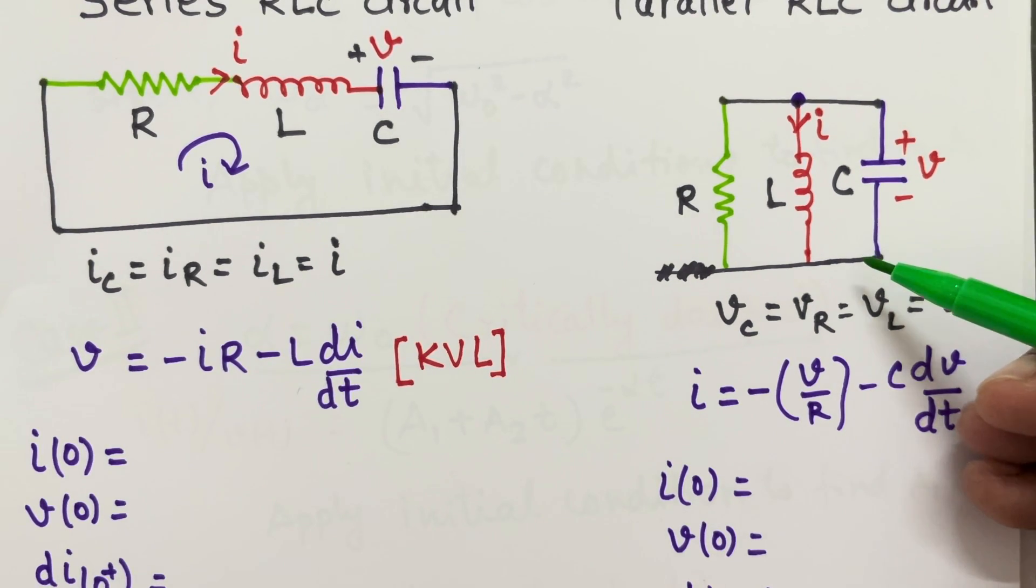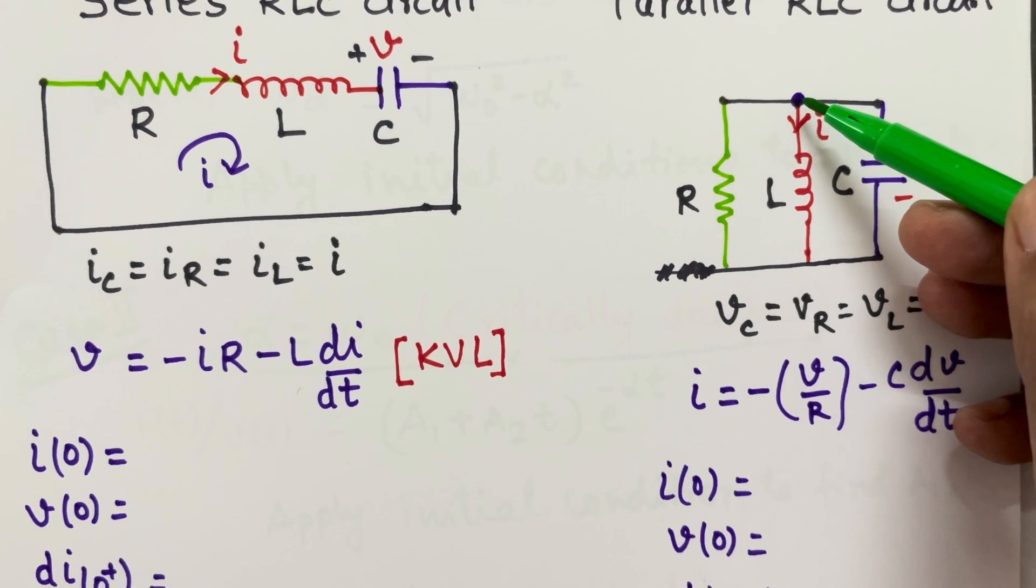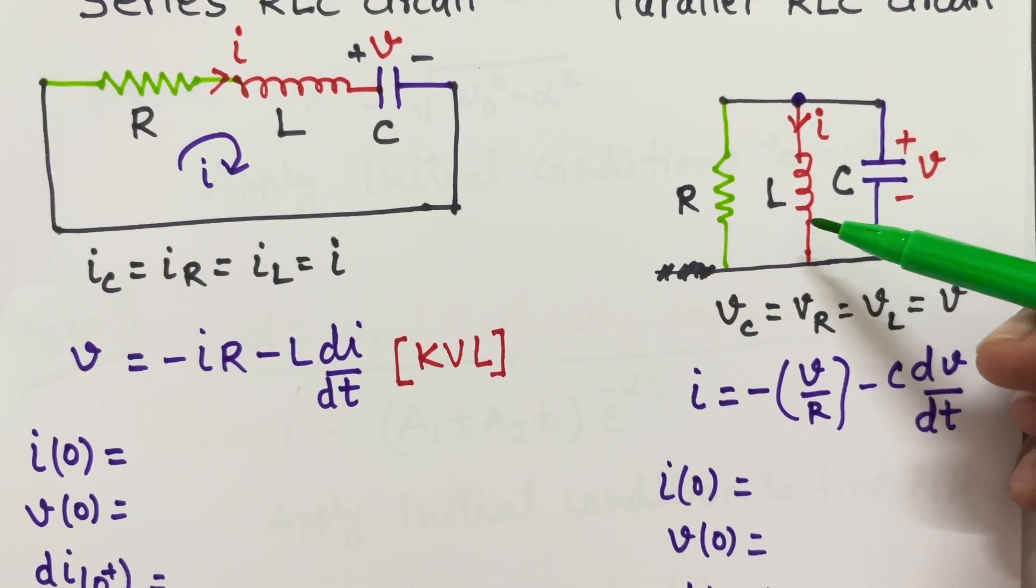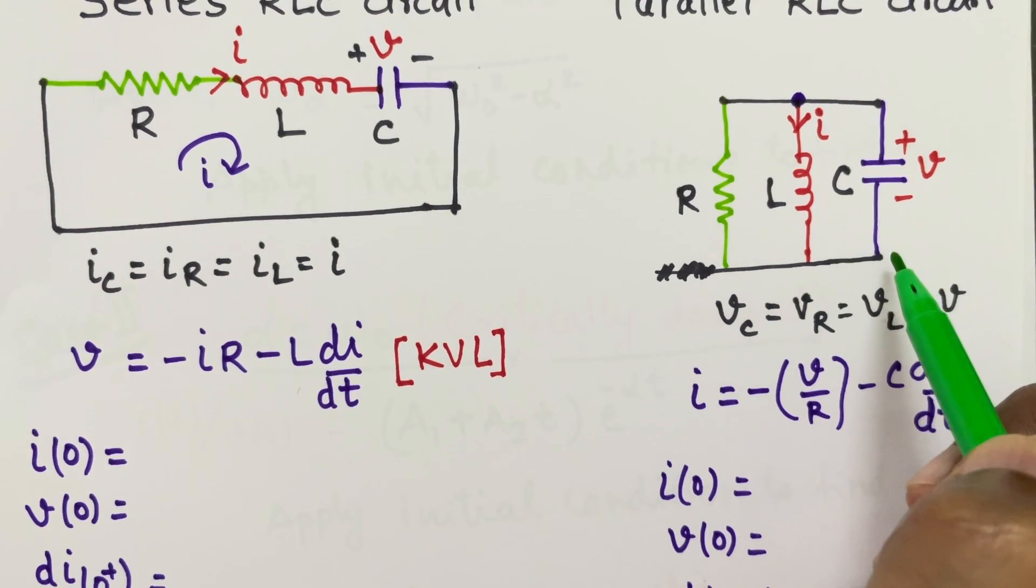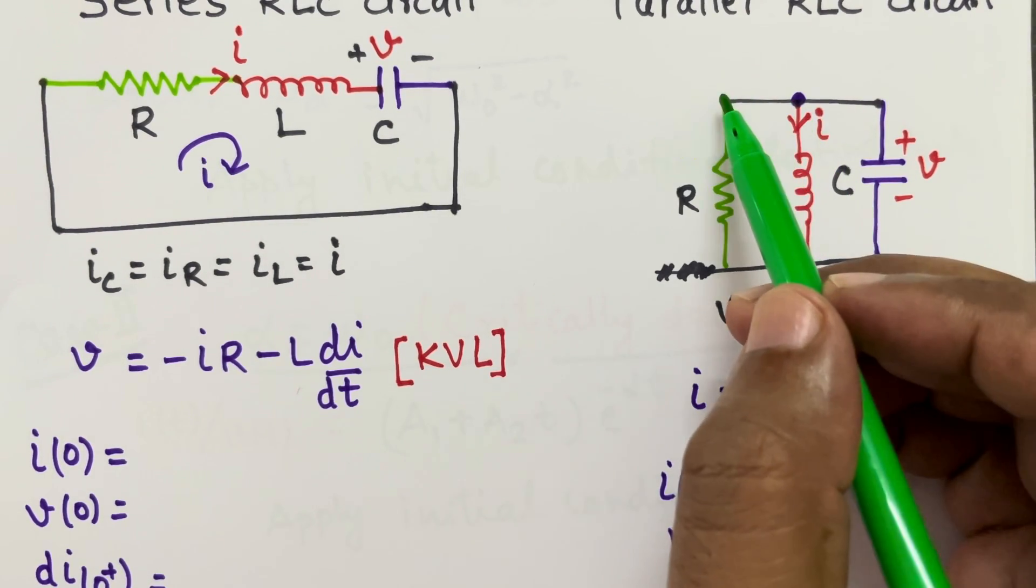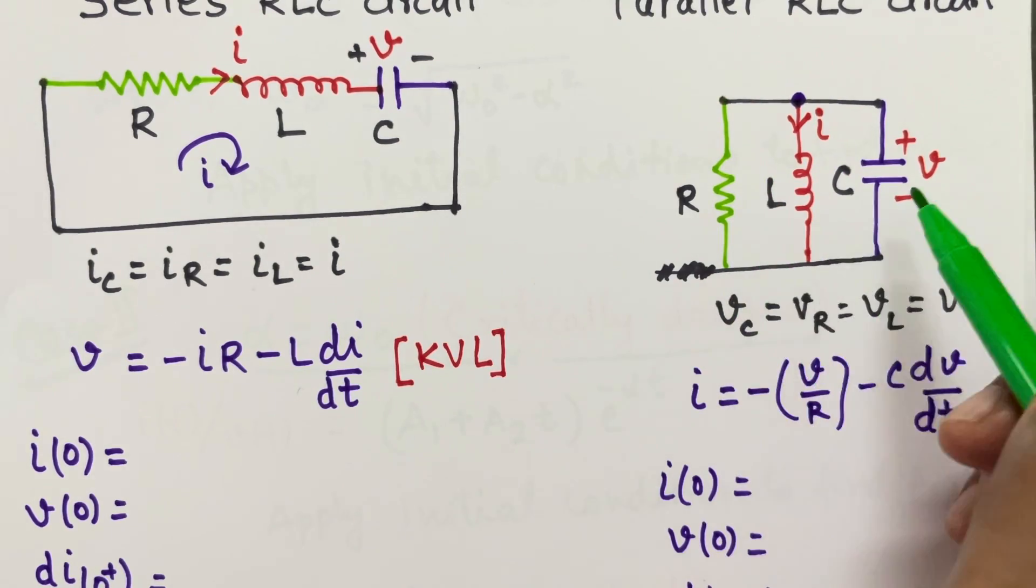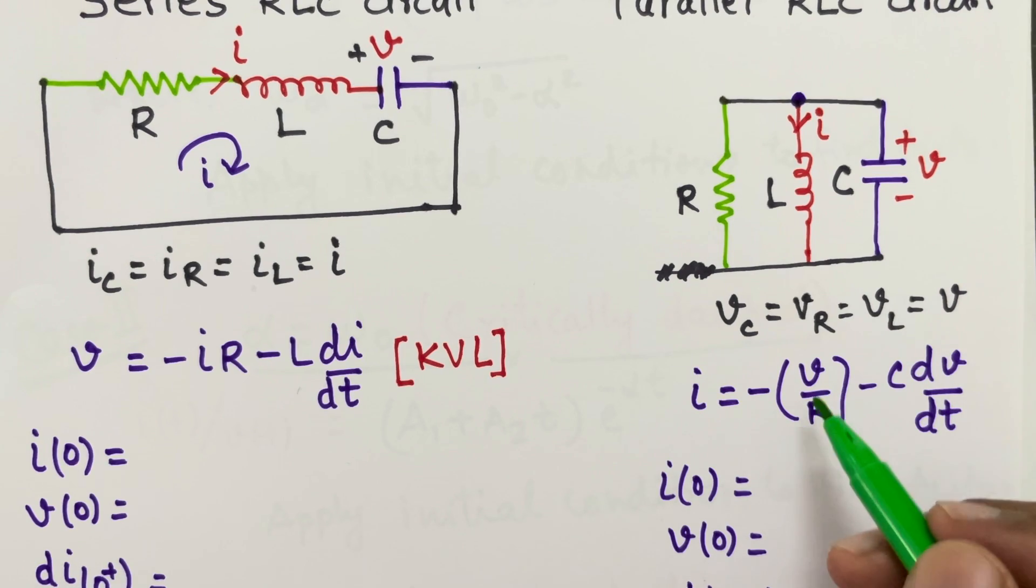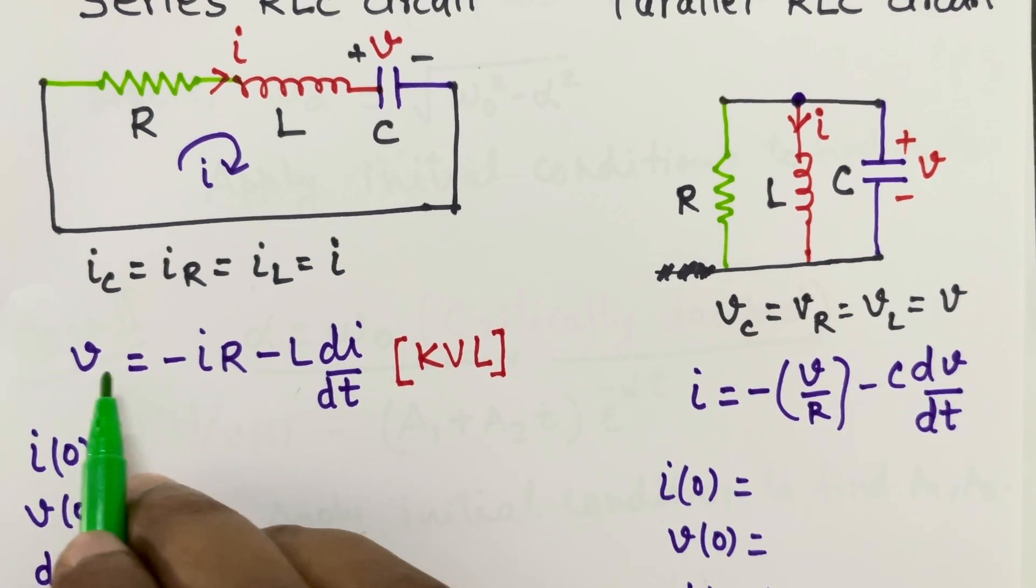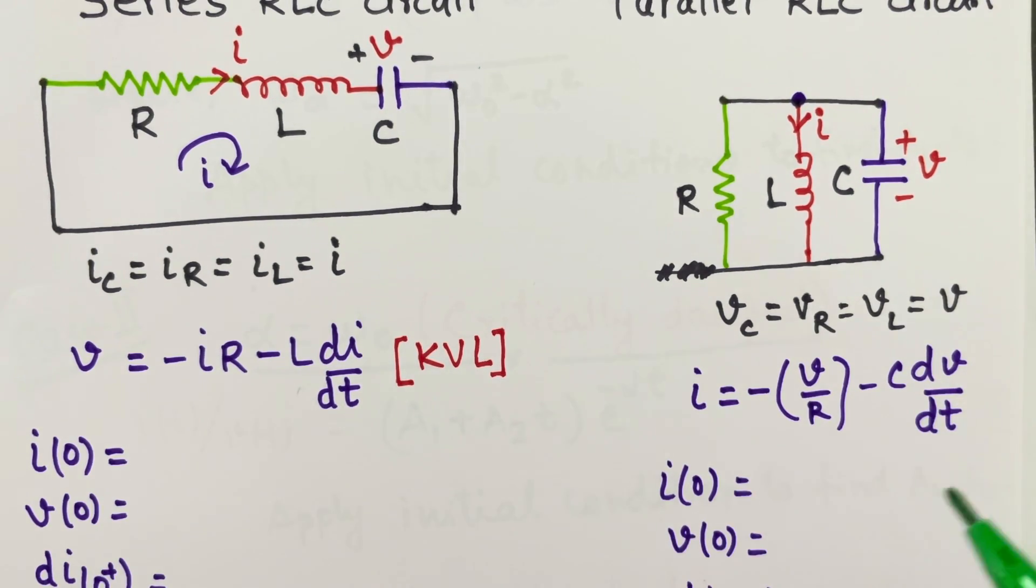Here we have to apply KCL at this node. The current through the inductor will be equal to current through the capacitor and current through the resistor. Current through the resistor will be voltage across this which is V divided by R. So this is negative of V by R and then current through the capacitor is C dV by dT. So these expressions are very important for finding out this dI by dT and dV by dT.